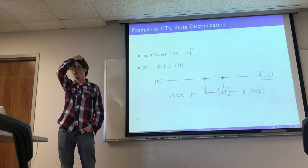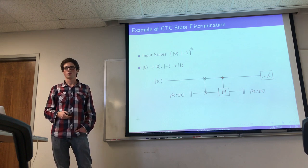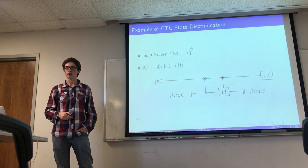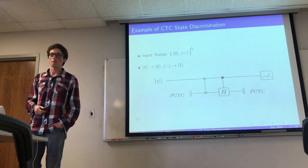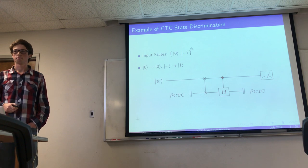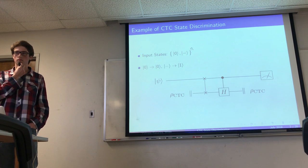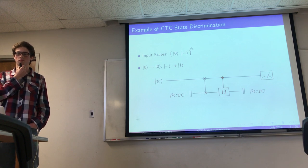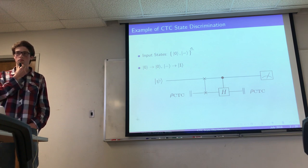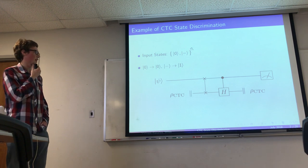The questioner confirms that ρ_CTC on the right loops back and goes into ρ_CTC on the left in the quantum computing model, and that ψ exists in regular time. Conceptually, at time T, ψ is in normal time; all of a sudden a ρ_CTC comes out of a wormhole — it has effectively already cloned ψ in some sense by going through the circuit infinitely many times. The action on ρ_CTC is just the identity.